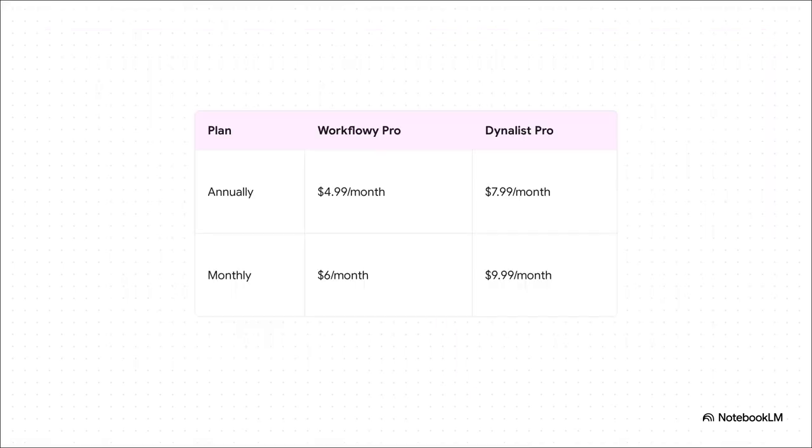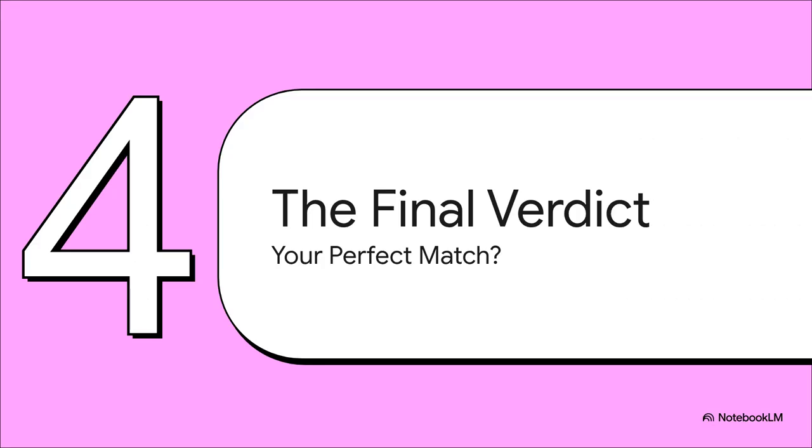If you decide to go Pro, the pricing pretty much lines up with their philosophies. Workflowy Pro will run you about $5 a month if you pay annually. Dynalist Pro is a little more, around $8 a month. So you're basically paying a $3 premium for that whole suite of power user tools.